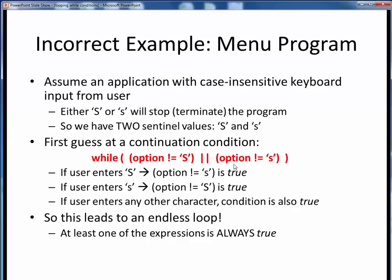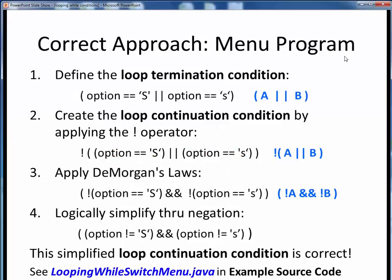How do we set this up properly? Here's a simple algorithm for the correct way of setting up the needed loop condition. First, we start by defining the specific case of the loop termination condition instead. Our looping should end if the user inputs a capital S or a lowercase s, as expressed here. Note that this is a specific example of this general form shown in blue.